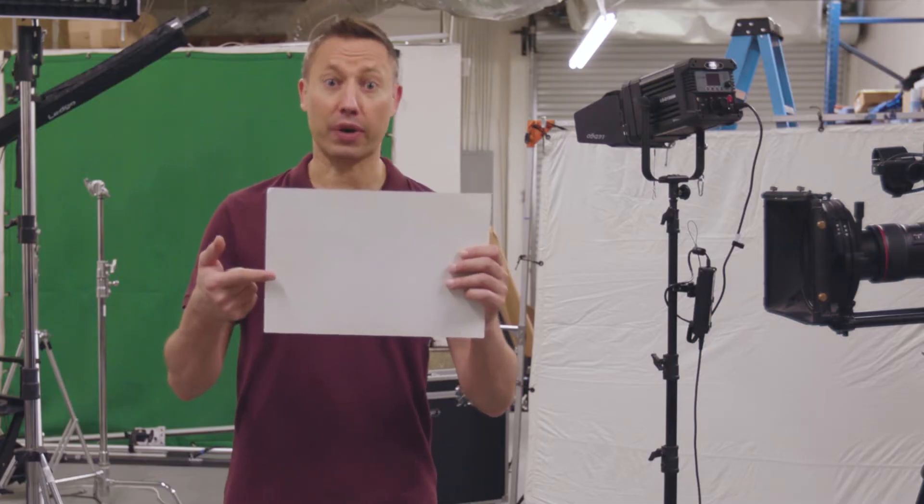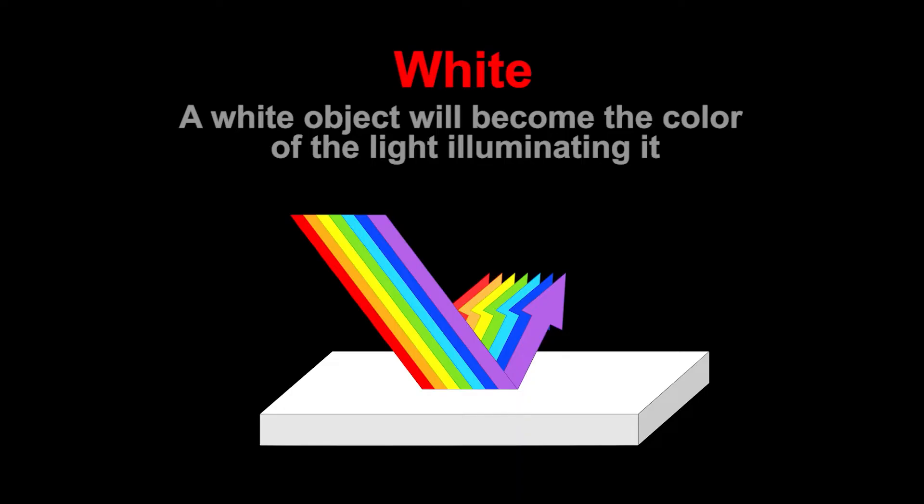Before we can start talking about color temperatures, it's important for us to define what is white. So I got a question for you. Is this white? How about this? Is this white? How about this? Actually, this is green. This is orange. This is blue. So what are we talking about here?